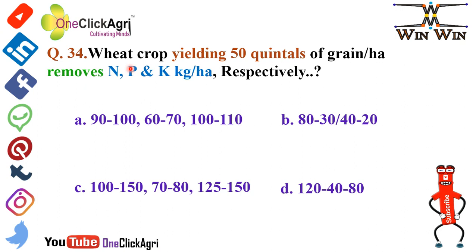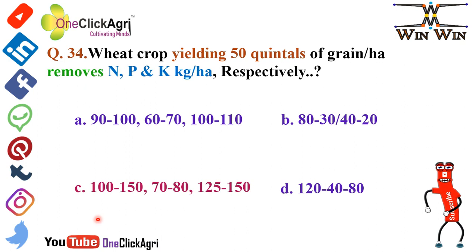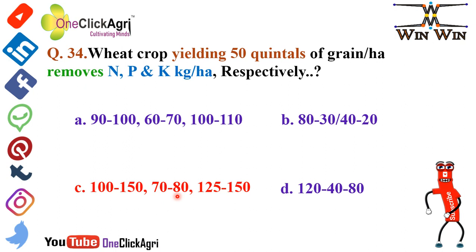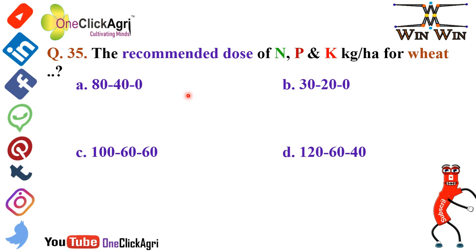Question number 34: Wheat crop yielding 50 quintals of grain per hectare removes NPK in the following amounts: nitrogen 100 to 150 kg per hectare, phosphorus 70 to 80 kg per hectare, and potassium 125 to 150 kg per hectare.